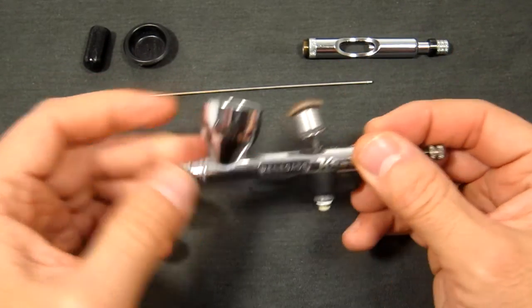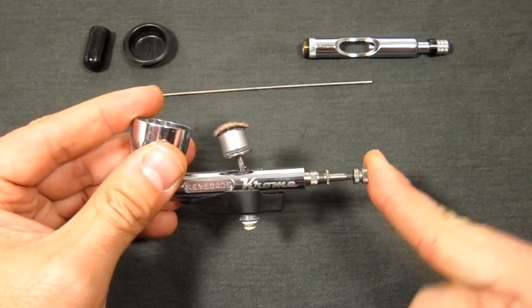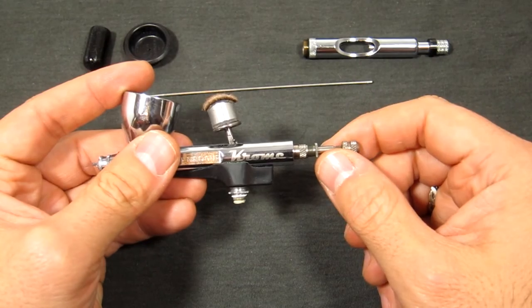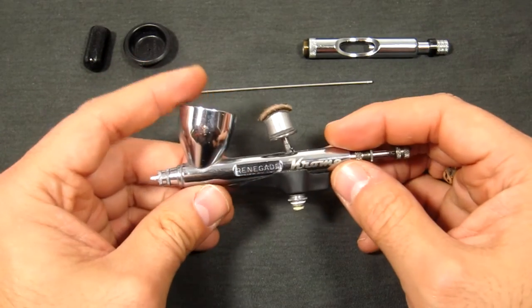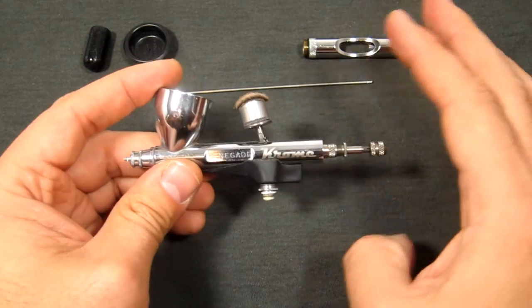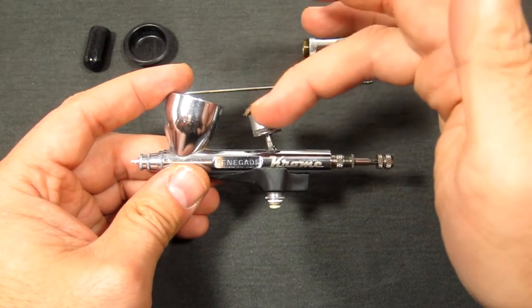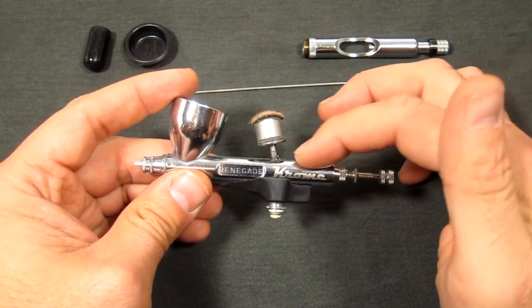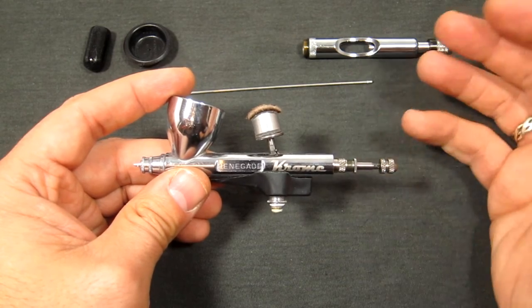But you can pull it out through the front by pushing it out that way and then pulling it out carefully. I like to just pull them out the back, it doesn't really matter either way I don't think. Now that is it for the back of the airbrush—you don't have to touch anything else with the trigger assembly, I'm sorry, trigger back plate, that's what I've been calling it.